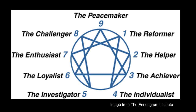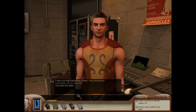The Enneagram is an ancient personality typing system based on a single circle with nine equidistant points or types. The nine points are connected to one another by a series of inner lines, which help indicate growth and stress directions for each type. While we each have a core number on the Enneagram with which we identify, the system is incredibly complex and nuanced, with subtypes, wings, directions of integration and disintegration, centers, levels of development, and more. To discuss all of these would result in a video that would be far too long, but I highly recommend delving more into all of these nuances if this video interests you.